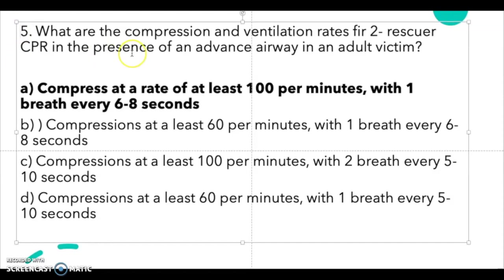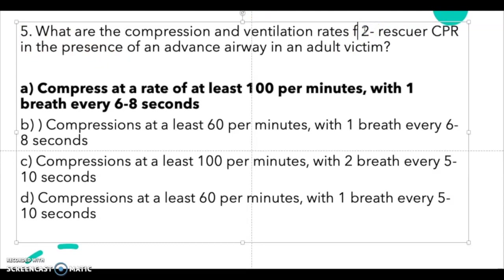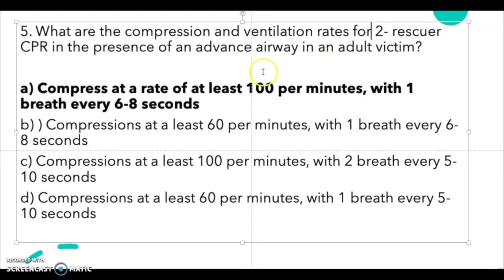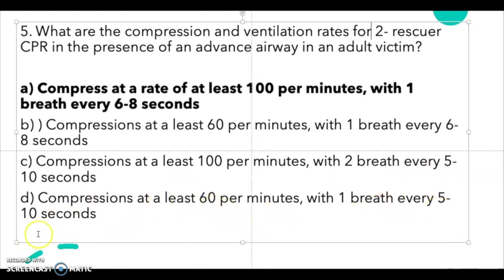Question 5: what are the compression and ventilation rates for two-rescuer CPR in the presence of an advanced airway in an adult victim? This question is a little tricky. A: compress at a rate of at least 100 per minute with one breath every 6–8 seconds, B: at least 60 per minute with one breath every 6–8 seconds, C: at least 100 per minute with two breaths every 5–10 seconds, D: at least 60 per minute with one breath every 5–10 seconds.